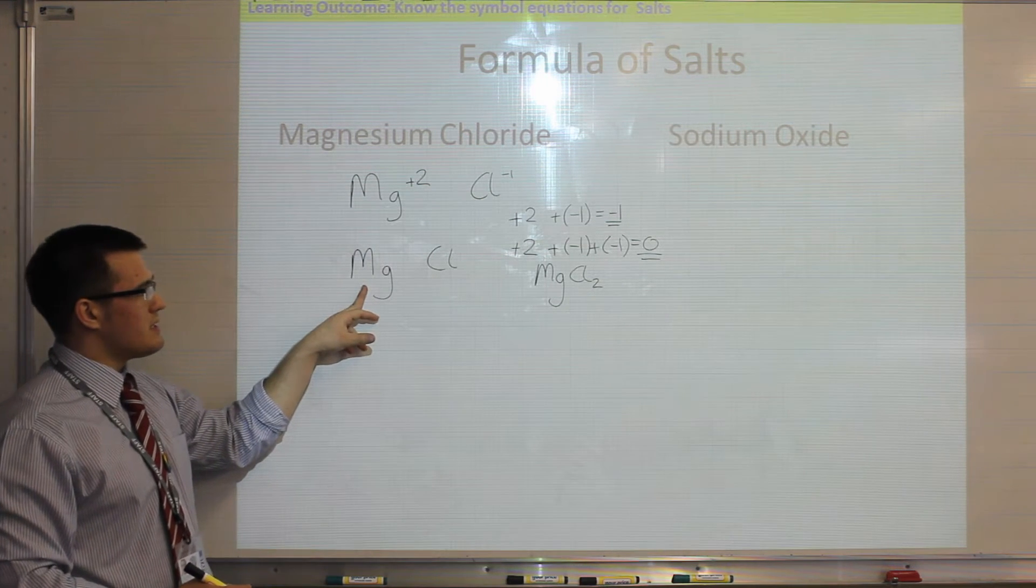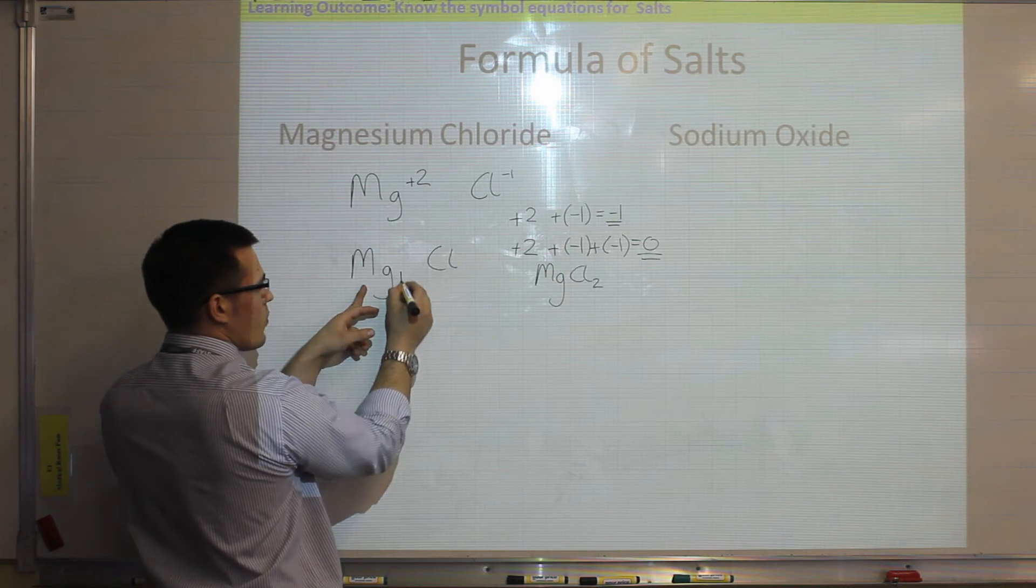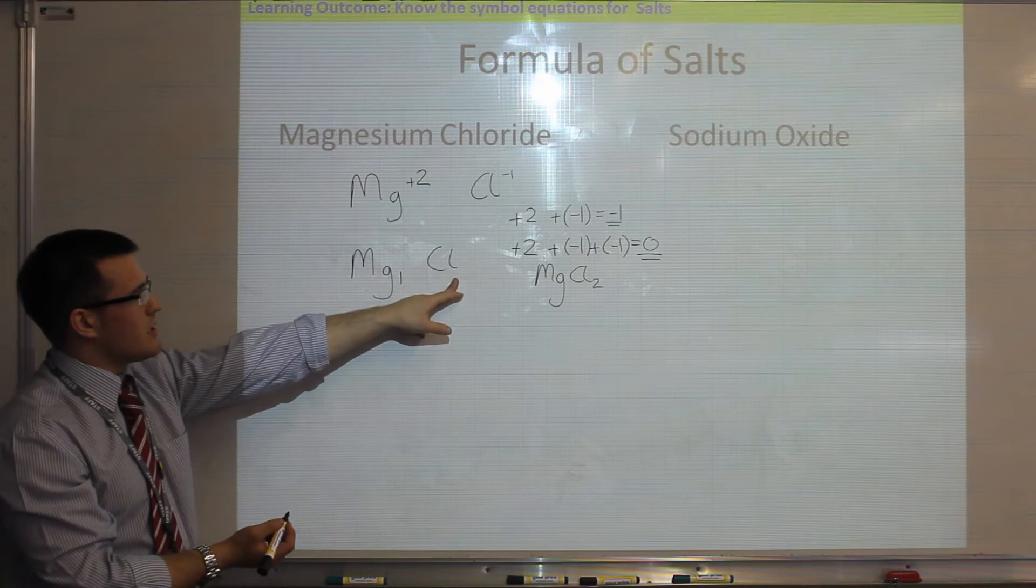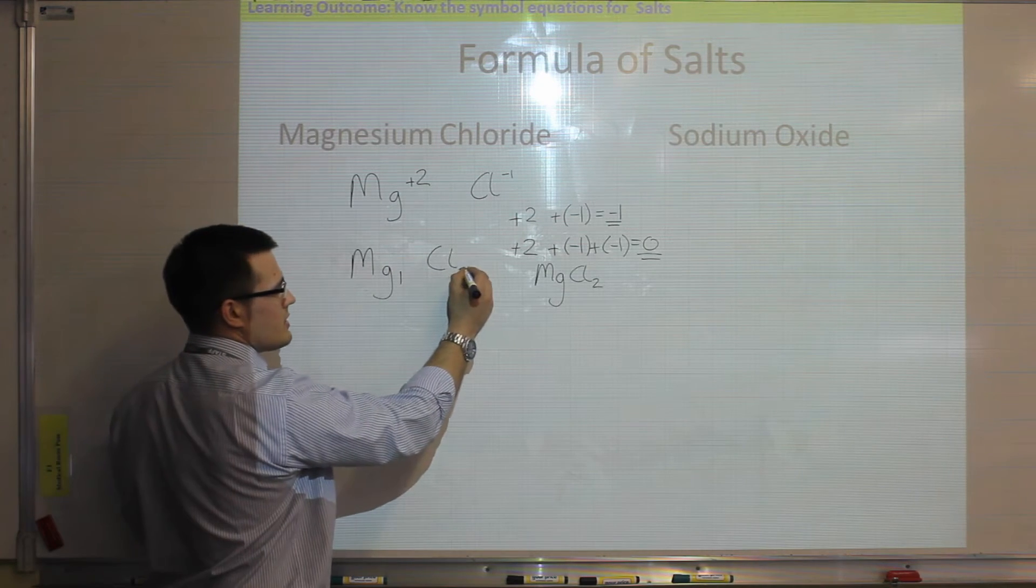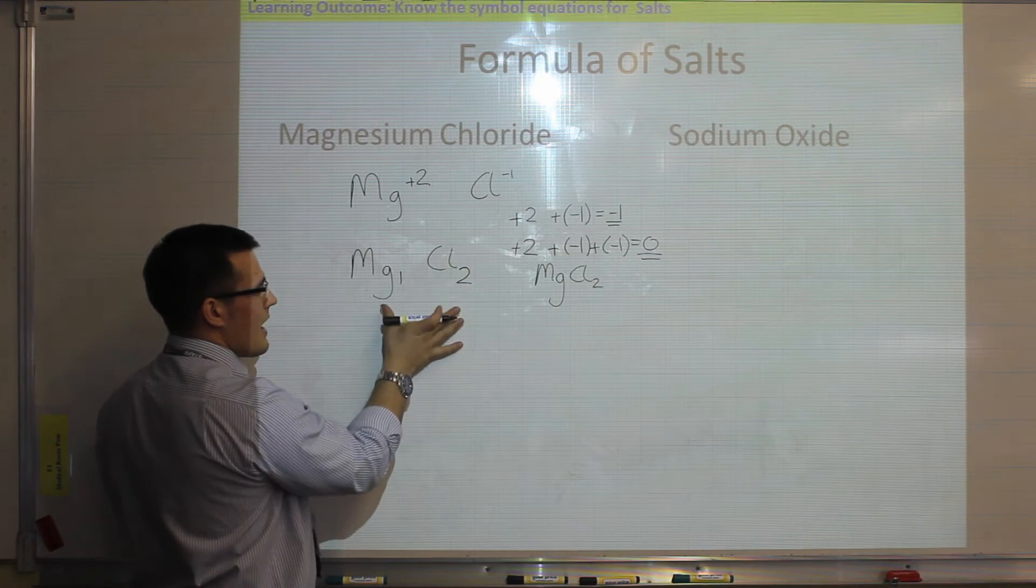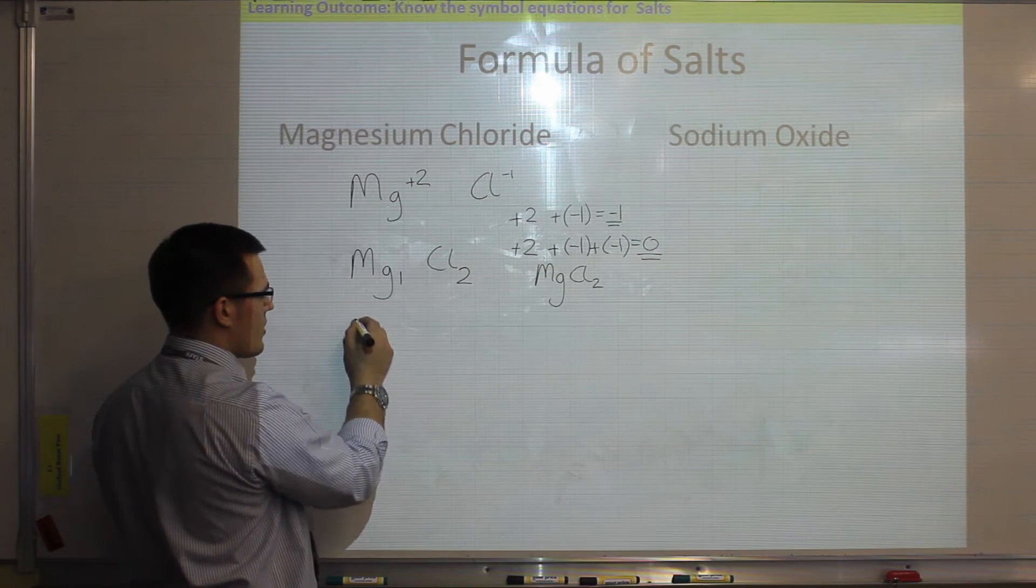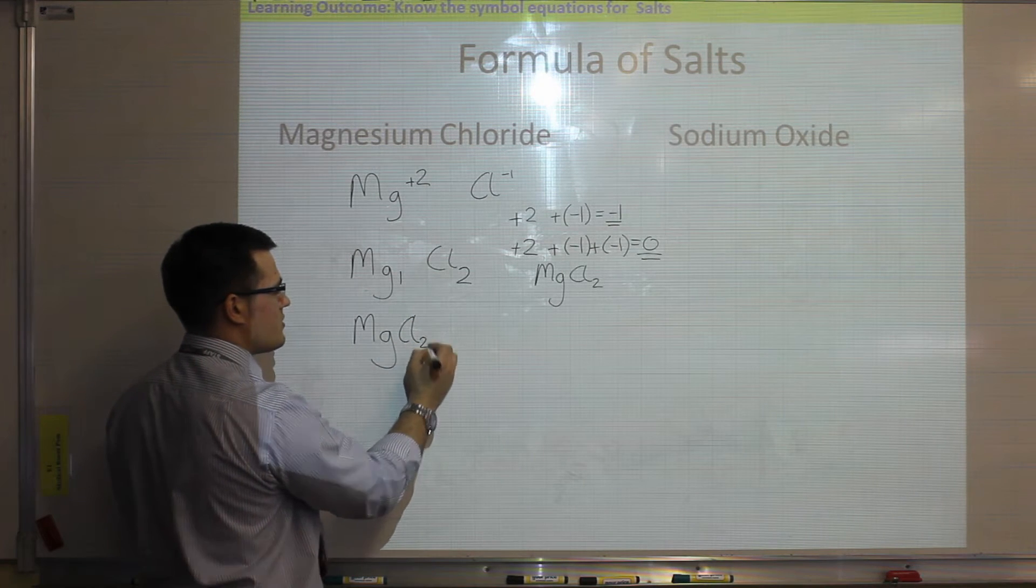So to work out how many magnesiums I need, I look at the number on the chlorine, so I only need one magnesium atom. To work out how many chlorines I need, I look at the number on the magnesium, so I need two of those. And then all I do as my final step is write that out neatly again, so if I've got a 1, I don't need to write that. So I can write MgCl2.